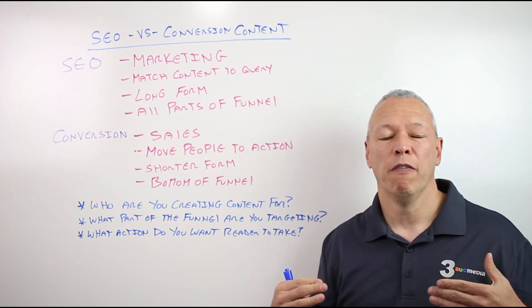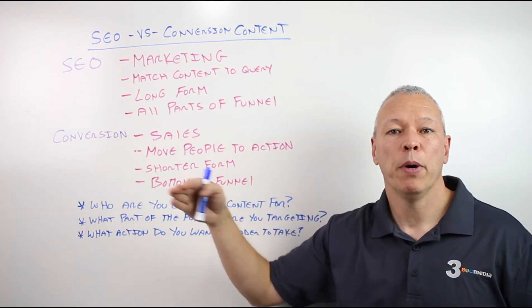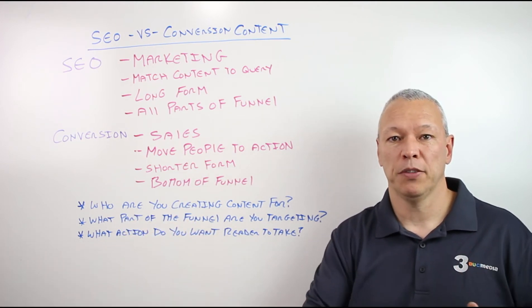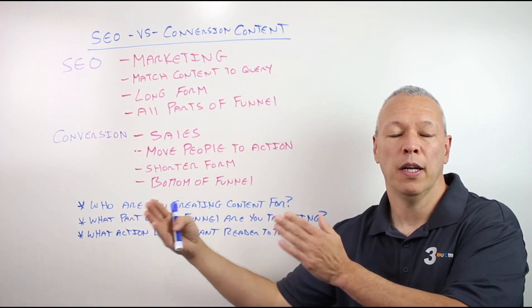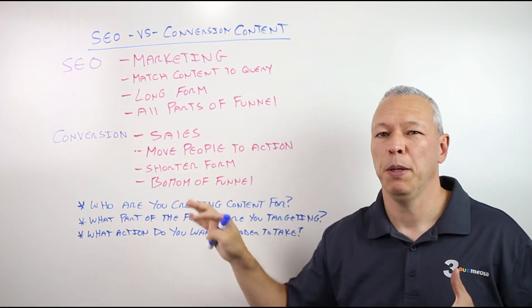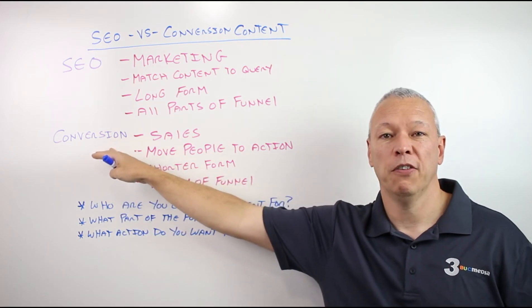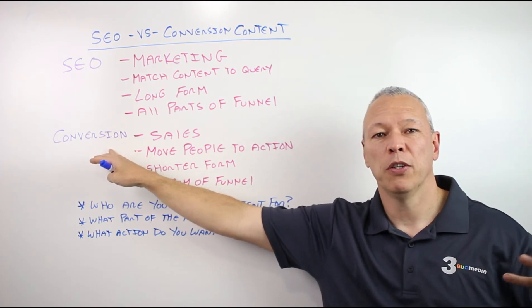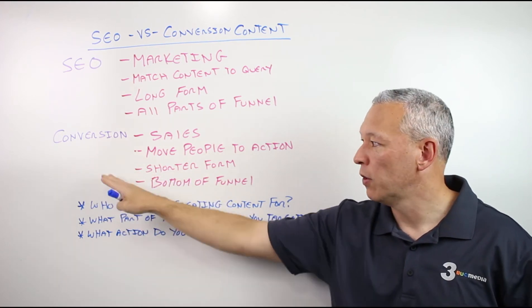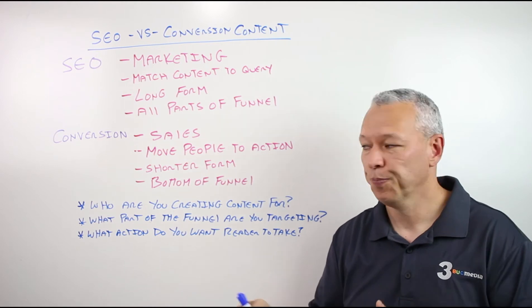An example of conversion content would be 'Five reasons to hire a certified financial planner.' Maybe that's only a 300 to 400 word article, but it has a lot of key benefit points — reasons why you should hire that type of person. If that's your business, that content is moving that person closer to contacting you. Typically with conversion based content, you're targeting the bottom of the funnel — people getting closer to taking action. You're not going to target somebody at the top of the funnel because they still have a long way to go before they're ready to purchase or contact you.